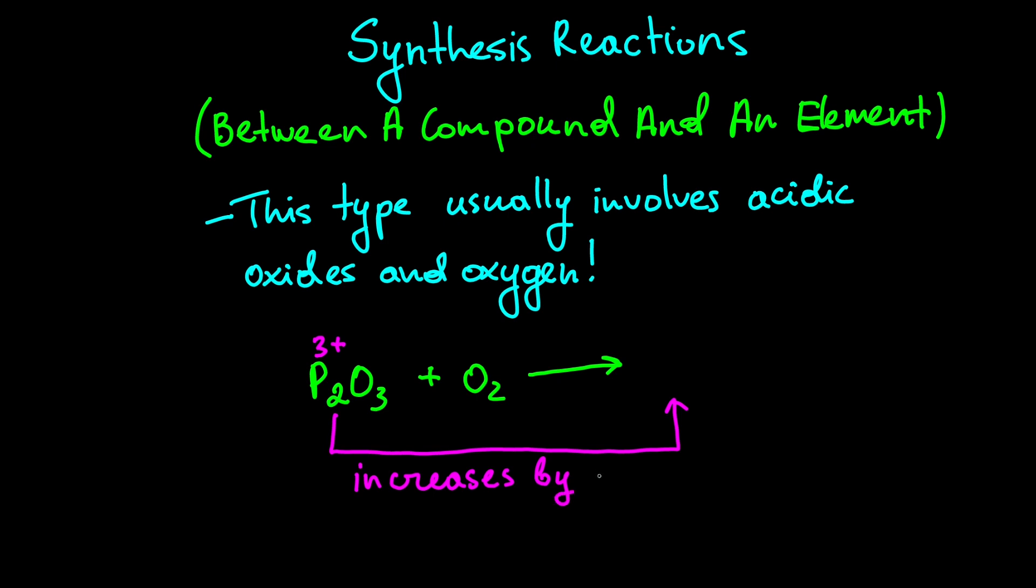So in the product, phosphorus charge should be five plus, and it combines with oxygen which has a charge of two minus. We swap charges with subscripts and get the P2O5 formula. In this case we don't need to balance the equation because we have an equal amount of the same atoms on both sides of the reaction.